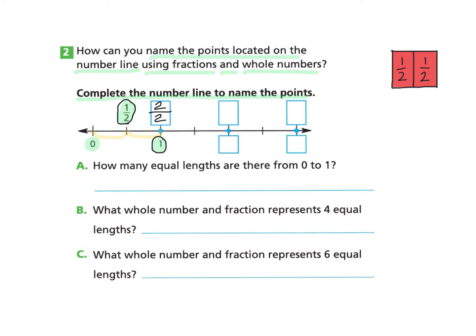Now we're going to continue on with the number line. We find that the next equal part would be three, and this would be four. So we can write four as the numerator, and we are looking at groups of two because there were two equal groups to the next number, so we write two as the denominator. We know that if we have four over two, that is the same as having two whole numbers, so we will write two in this square.